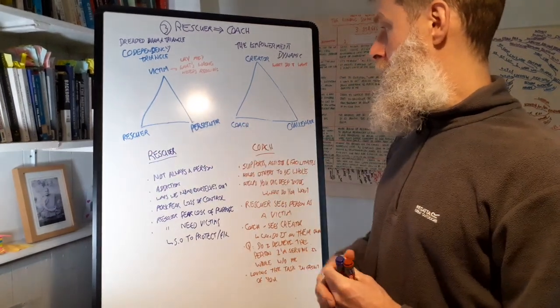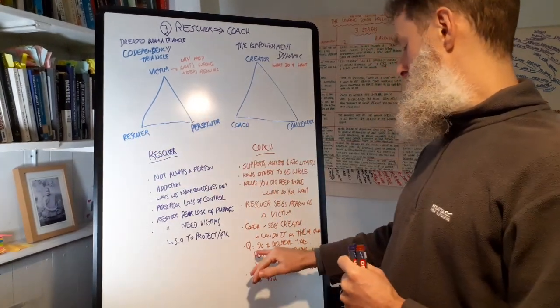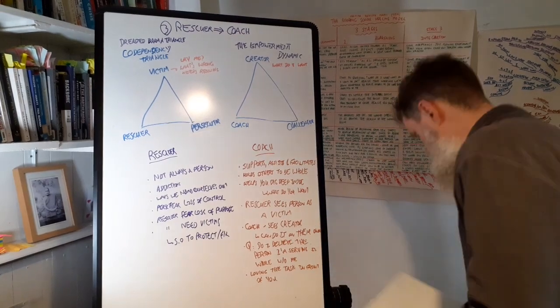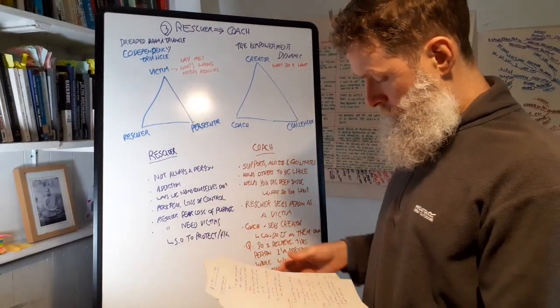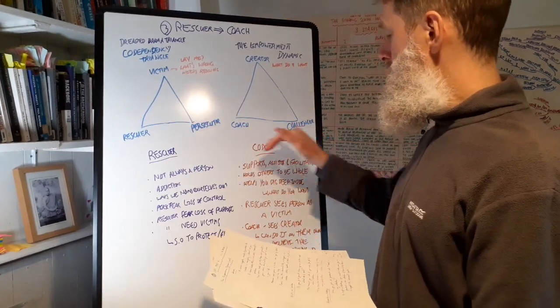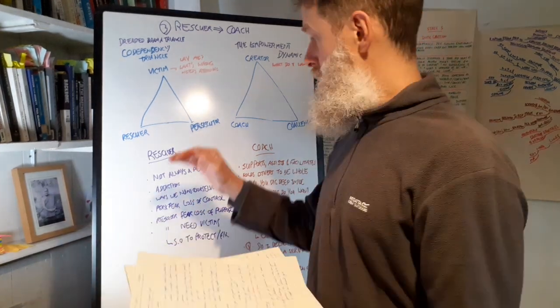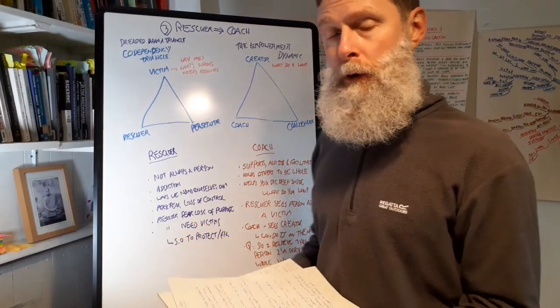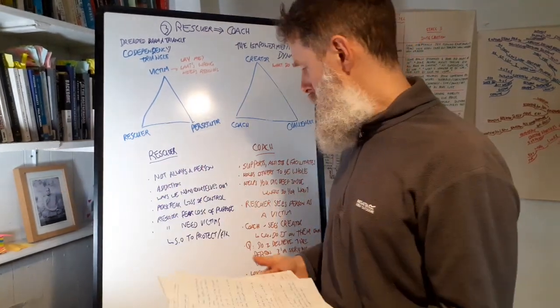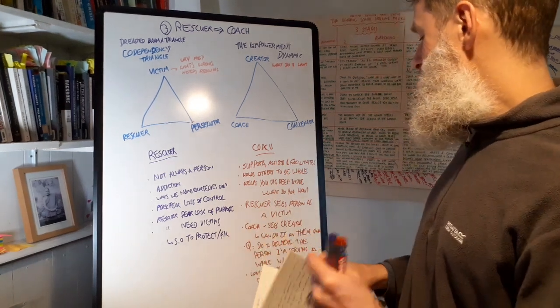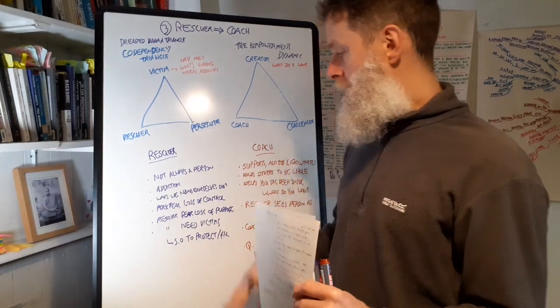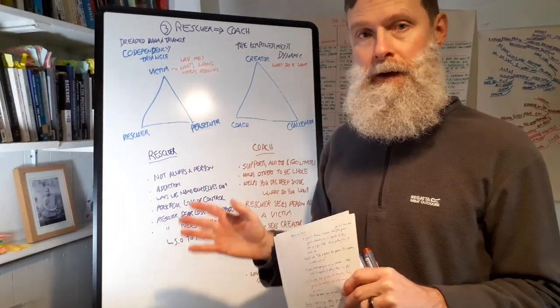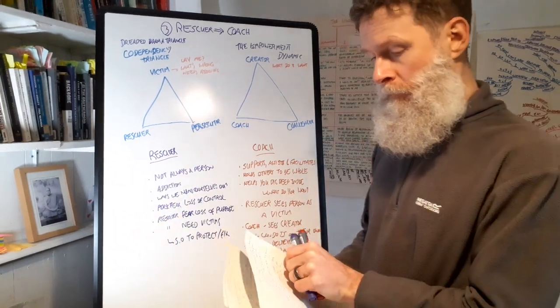So how do we move from rescuer to coach? The immediate thing we can ask is the question. With the challenger, what is my intention when we want to move from persecuting something to challenging? Is it to help them? And then the victim, how do we move from victim to creator is to ask instead of why me, but what do I want? What's my vision here? With the rescuer, the question is: do I believe the person I'm serving is whole without me? So the rescuer feels that person in front of them is a victim, whereas the coach sees a creator in front of them. You are a creator, you're a sovereign being.